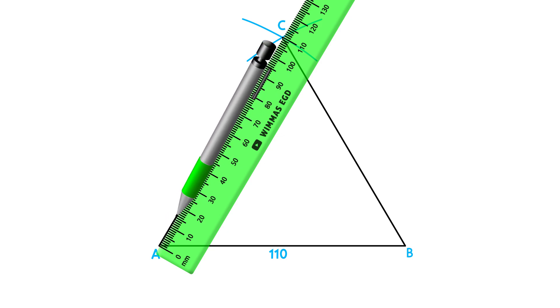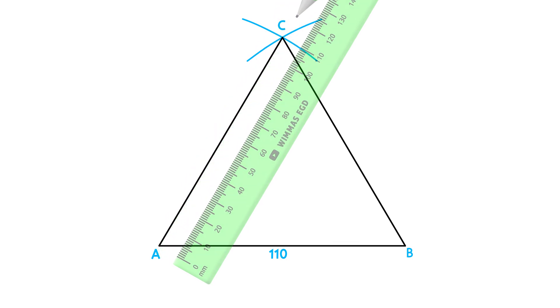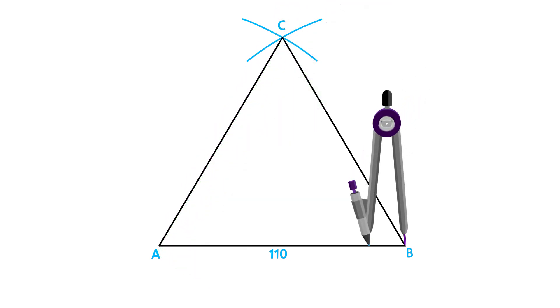Next, construct two angle bisectors. Start with angle B. Place your compass on point B, adjust it slightly and draw arcs to cut through AB and BC. Label the intersections as point 1 and 2.